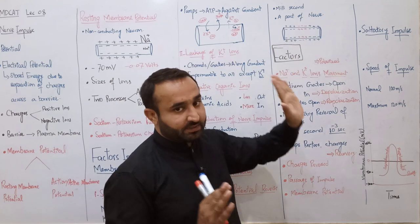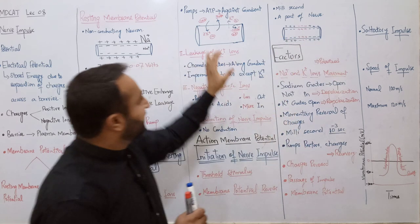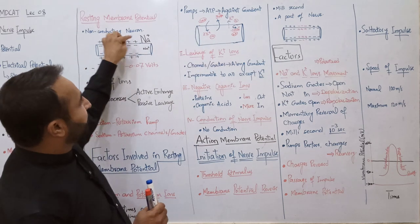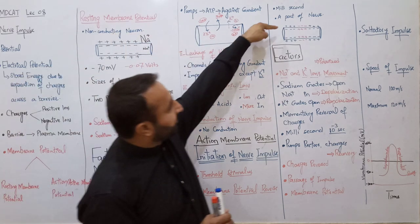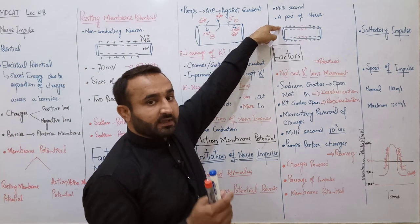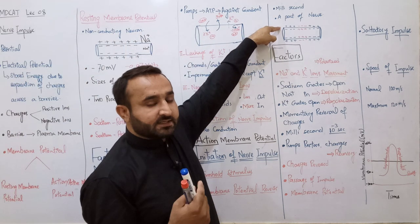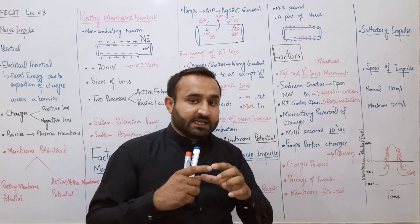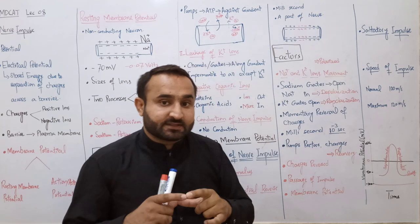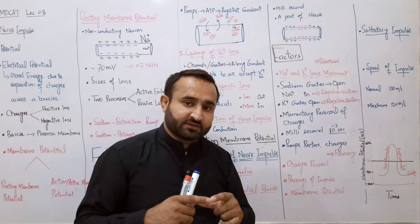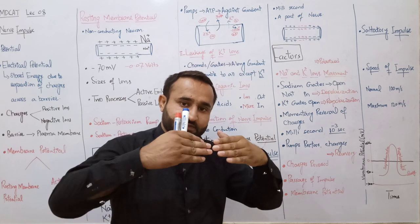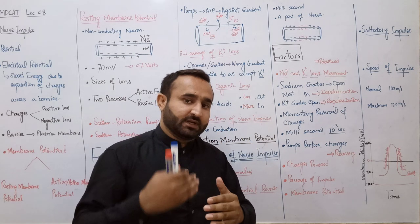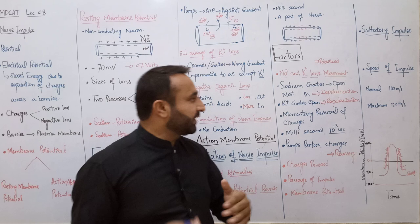جب resting membrane potential ہے تو outer region میں زیادہ positive اور inner region میں negative ہے - اس کو کہتے ہیں the nerve cell is polarized، nerve membrane is polarized۔ Outer positive charge، inner negative charge - poles بنے ہوئے ہیں، ایک positive pole اور ایک negative pole۔